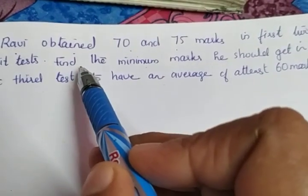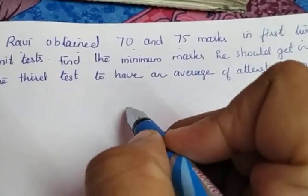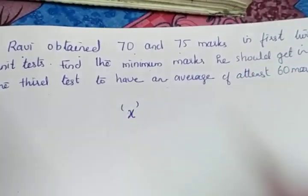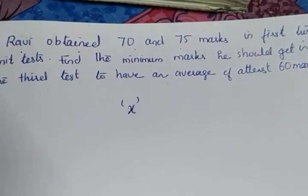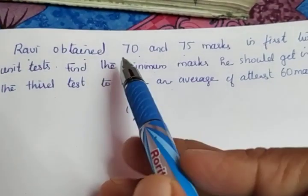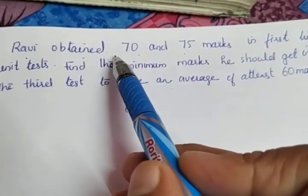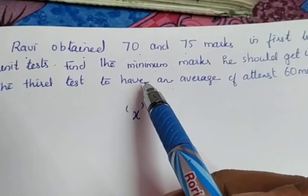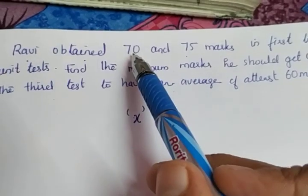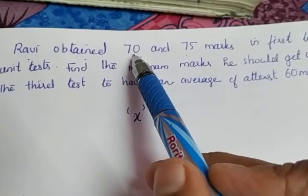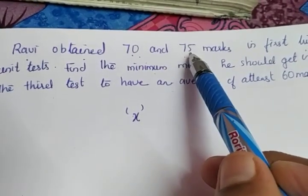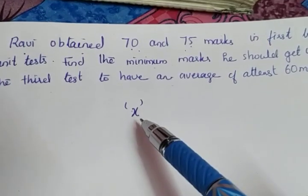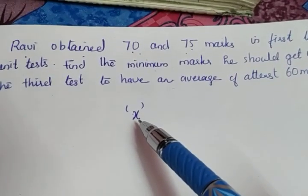The question is to find the minimum marks, so I am taking x as the minimum mark. The question speaks about three unit tests: in the first unit test he is scoring 70 marks, in the second one he is scoring 75, and in the third we are taking it as x.